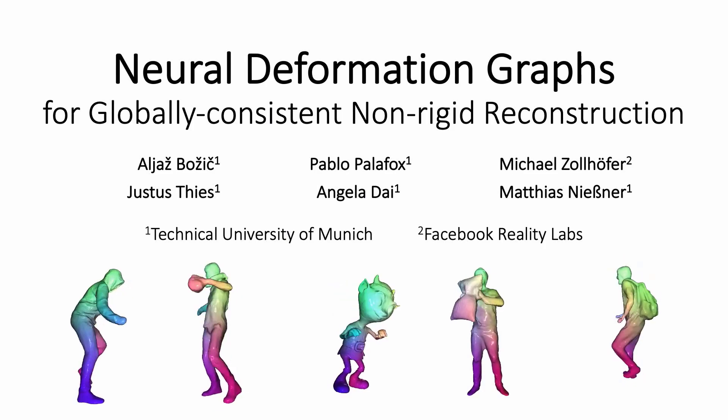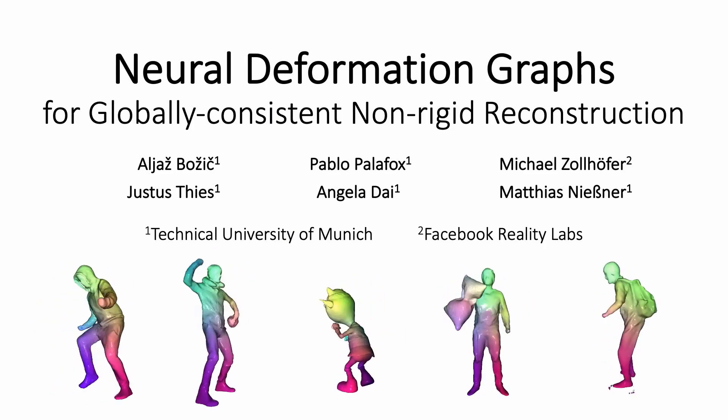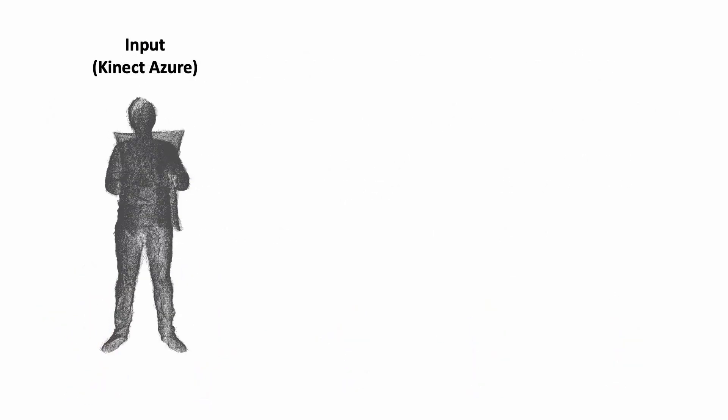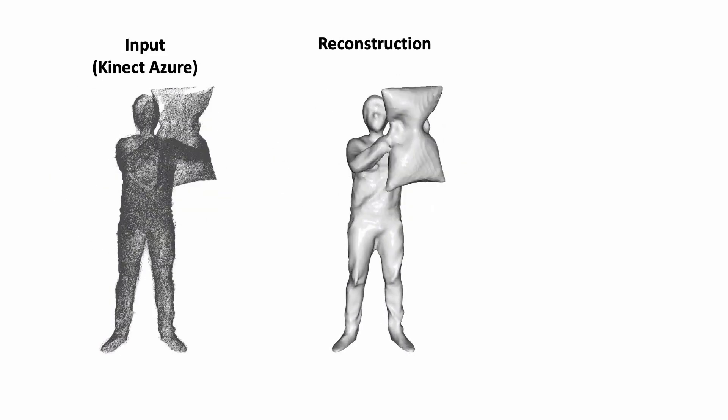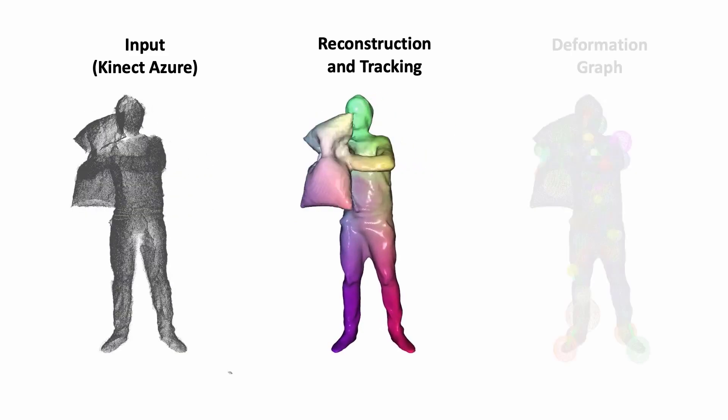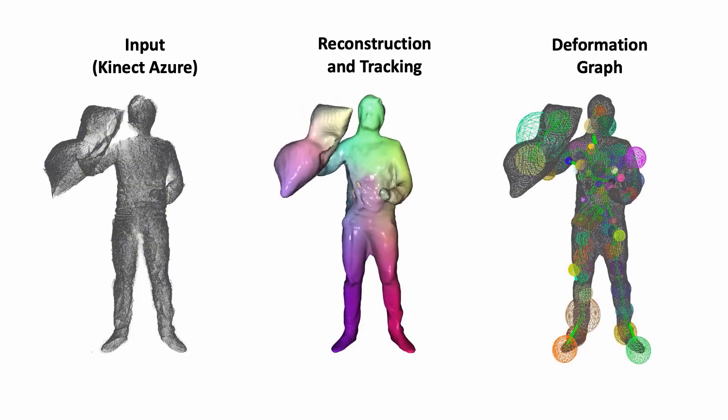We present neural deformation graphs for globally consistent non-rigid reconstruction. Given a sequence of a non-rigidly moving object recorded by commodity depth sensors, our method reconstructs and tracks the surface in a globally consistent manner. Based on a global deformation graph, our approach is able to handle fast motion.